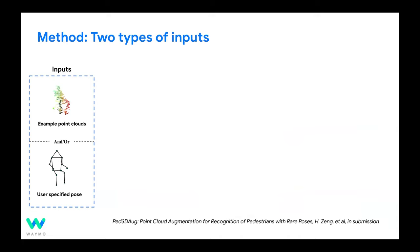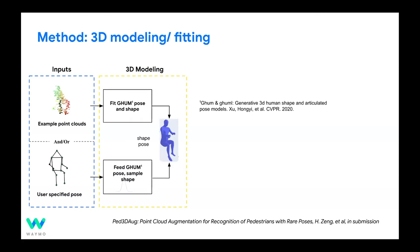What we do is start from two types of inputs. First, you may find examples where your method doesn't perform well and get point clouds of those examples. Second, you can manually define poses you know your algorithm doesn't handle well. We then fit those inputs into a parameterized human model.